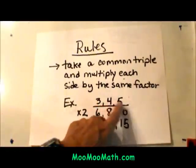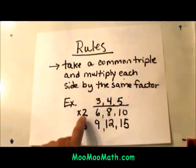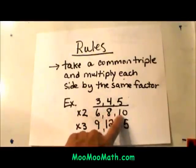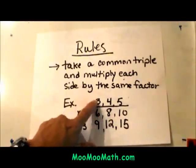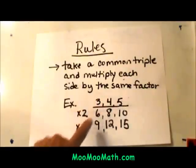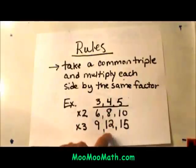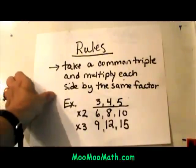So we have 3, 4, 5. In the example I showed you, we multiplied each side by 2 to get a 6, 8, 10 triangle. You can also multiply 3, 4, and 5 by 3 to get 9, 12, and 15. You can do that with 4 or 10. It could be a 30, 40, 50 right triangle. Any of those.